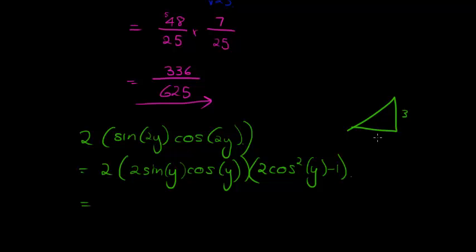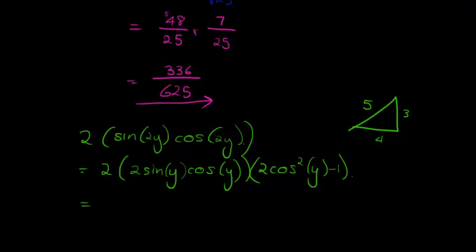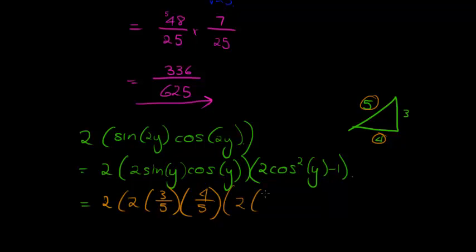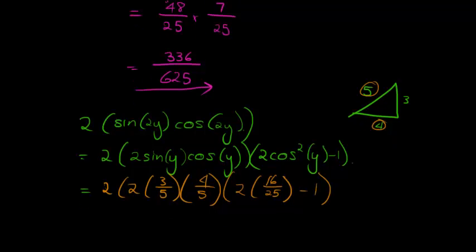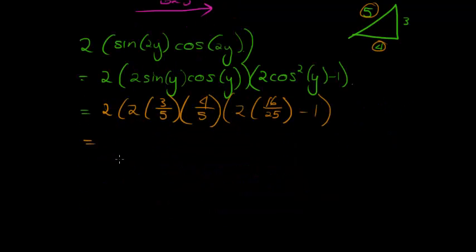And sin of y is opposite over hypotenuse, so if we replace that in here, then we get 2, 2 sin y opposite over hypotenuse is 3 over 5, cos is 4 over 5, because it's adjacent over hypotenuse. 2, now we have 4 over 5, 4 over 5 squared, let's just make that 16 over 25, skip some steps, 16 over 25, minus 1. And now we just simplify that.